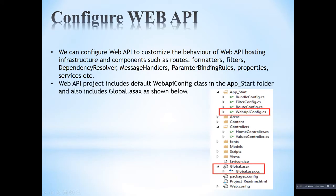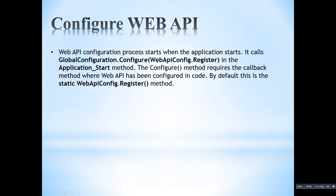Now coming to the WebApiConfig class — there will be a Register method. The Web API configuration process starts when the application starts: it calls GlobalConfiguration.Configure, then WebApiConfig.Register. We are passing a callback function, which is a static method in the WebApiConfig class. In the Application_Start method this will be invoked, and internally it will invoke the Register method of WebApiConfig.cs.